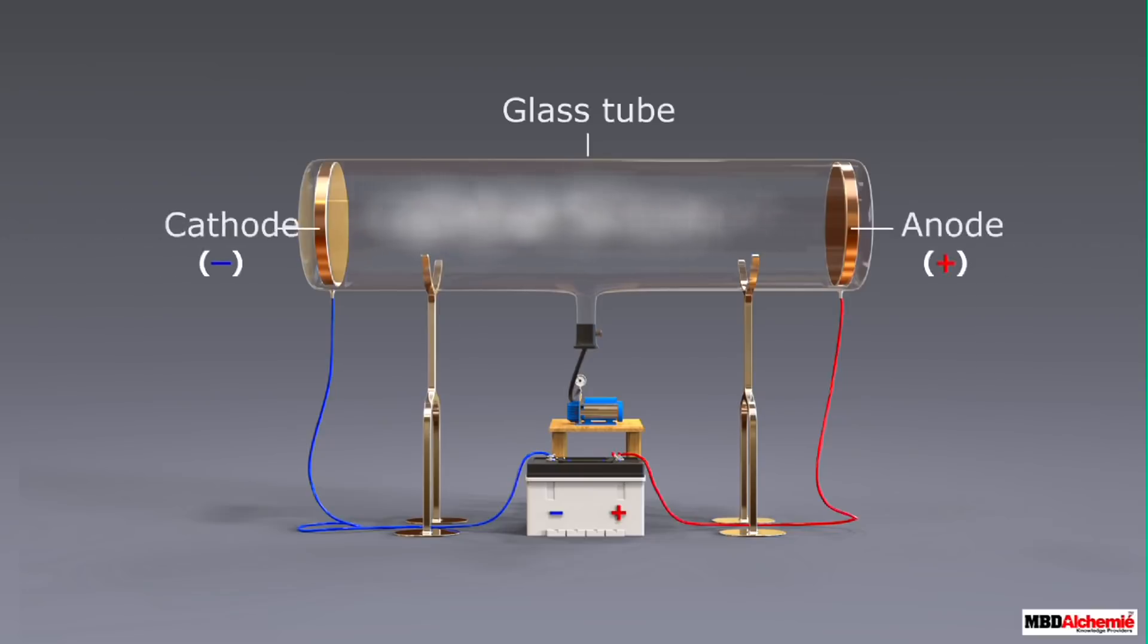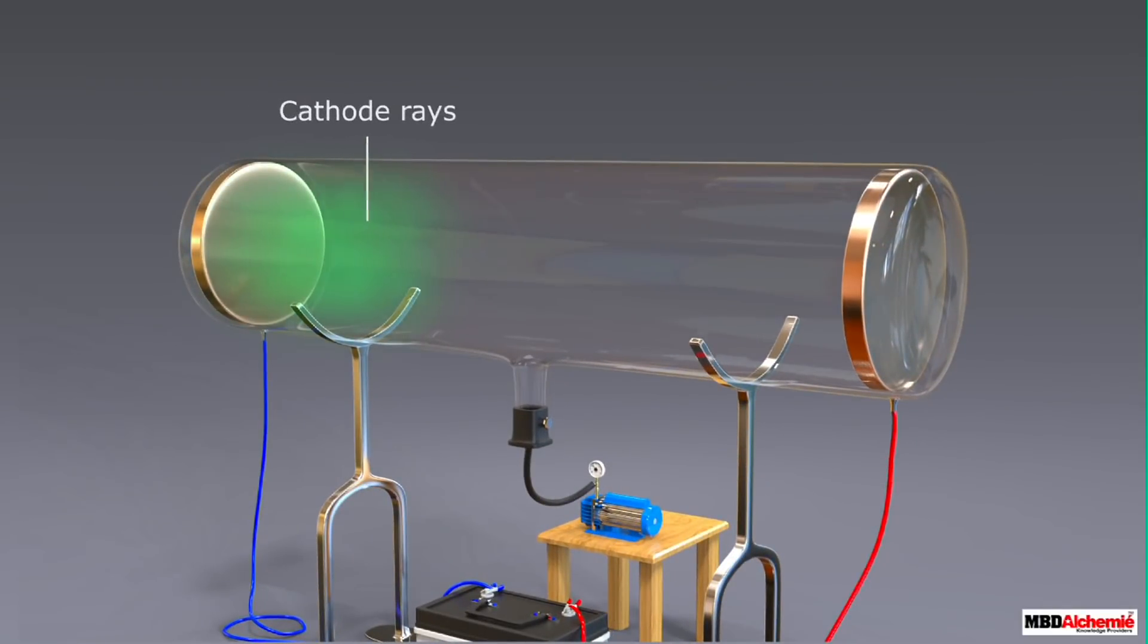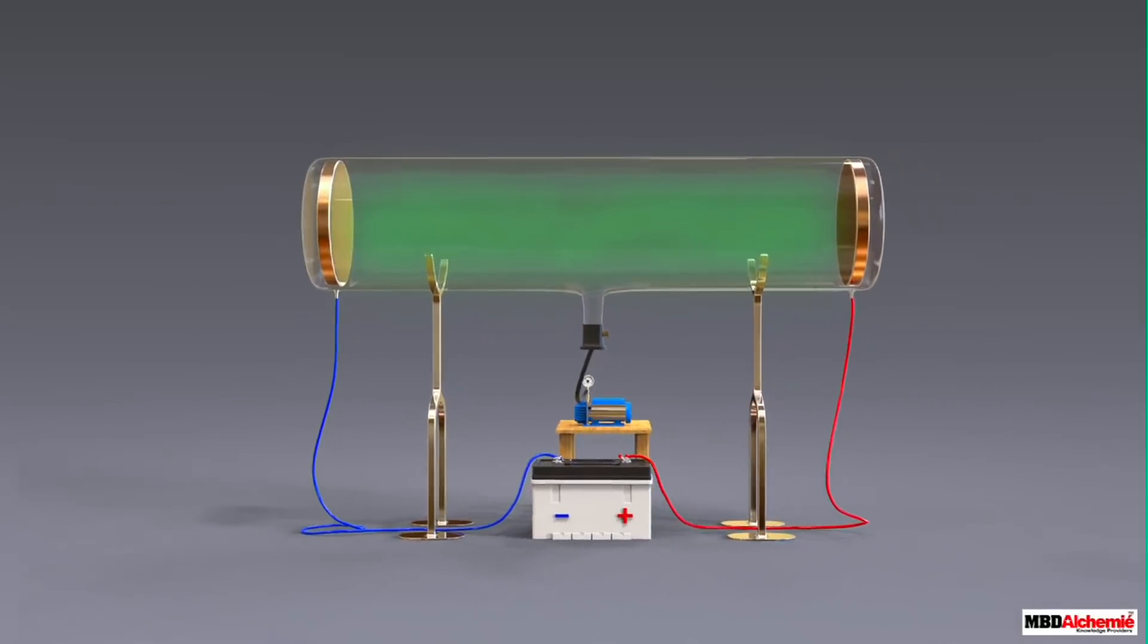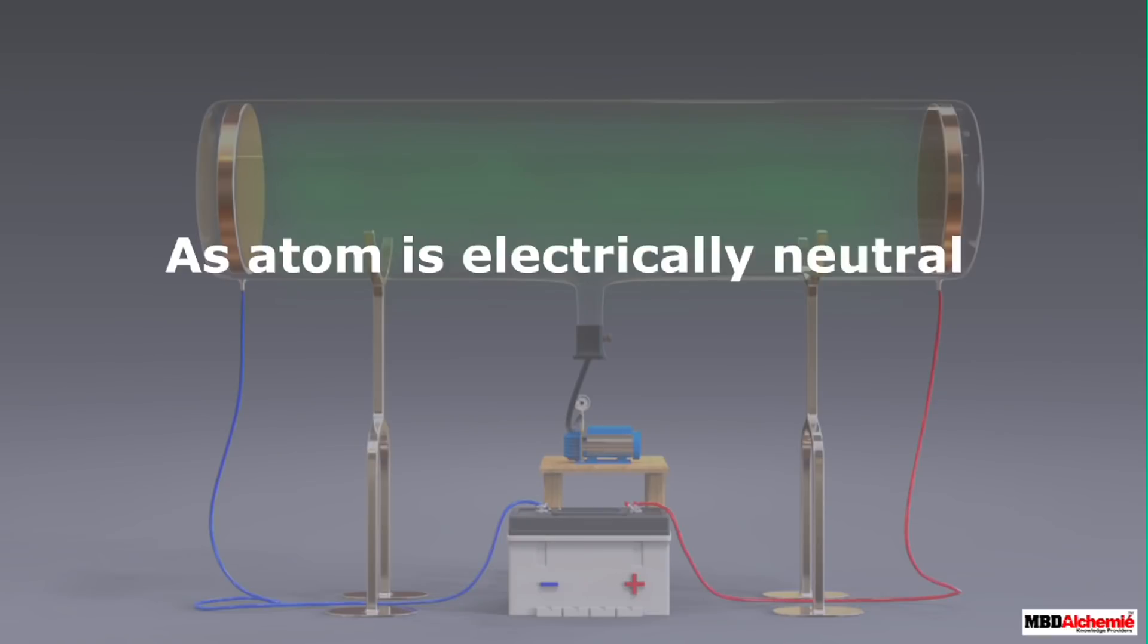The setup of the experiment consisted of a glass tube containing a gas and two electrodes at its two ends connected to a battery. The gas inside the tube had a very low pressure which was maintained with the help of a vacuum pump. On passing the electric discharge, the rays called cathode rays were produced which were attracted towards the positively charged plate. As these were attracted towards the positively charged plate, these were supposed to be made up of negatively charged particles which were named by Sir J.J. Thompson as electrons.